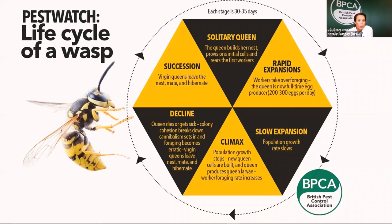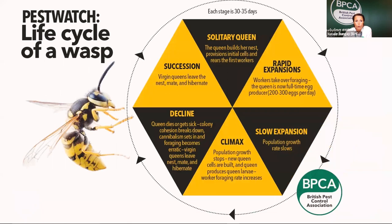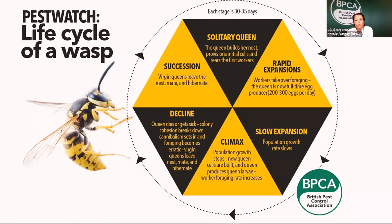It's really important to know the life cycle and biology of wasps because your customers appreciate your knowledge. When called to a job, they want to know why these wasps are here and what times of year they build nests. It really starts with the queen, who comes out of hibernation - or overwintering - any time between April and May when the weather is warming. She'll normally start building a nest from about golf-ball size.